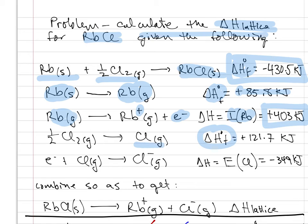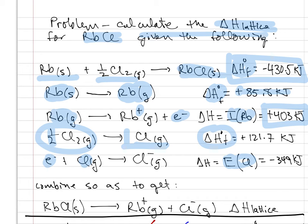The delta H of formation of chlorine atoms derived from chlorine in its natural state of diatomic gas requires that we dissociate one-half mole to provide one mole of chlorine. Remember, delta H of formation is the formation of one mole of that substance from the element in its standard state — in this case diatomic chlorine — and would require one-half mole. The electron affinity for chlorine atoms, that is the affinity of a chlorine atom for an electron to produce a chloride ion, is minus 349 kilojoules.